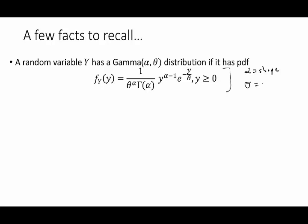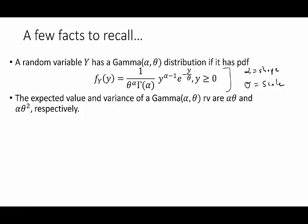The next fact to recall is that if you have a gamma distribution then its expected value is alpha times theta, and its variance is alpha times theta squared. Those formulas will also come in handy as we progress through this video.